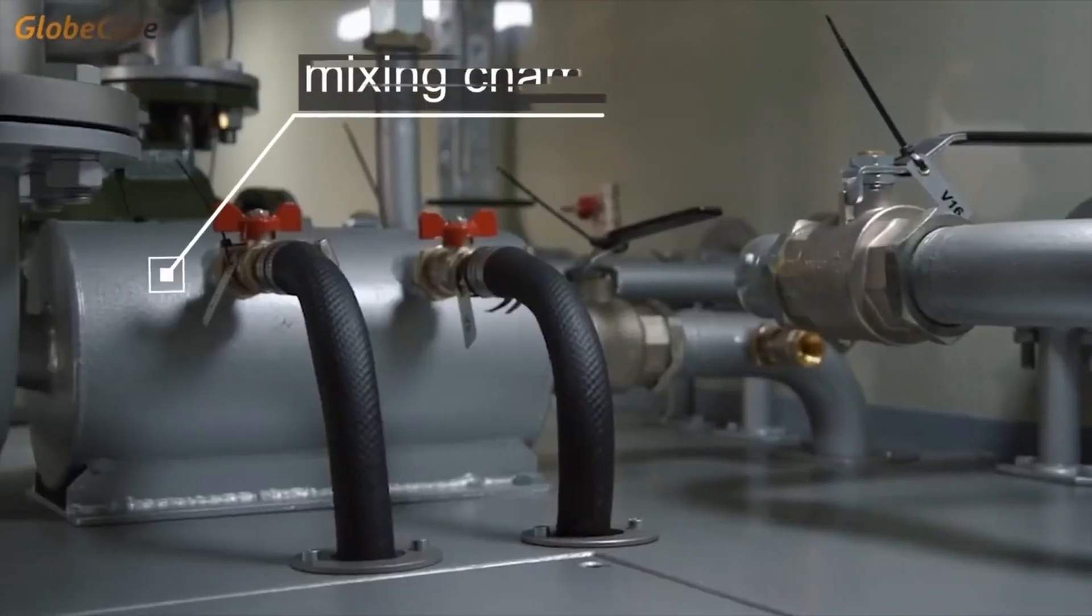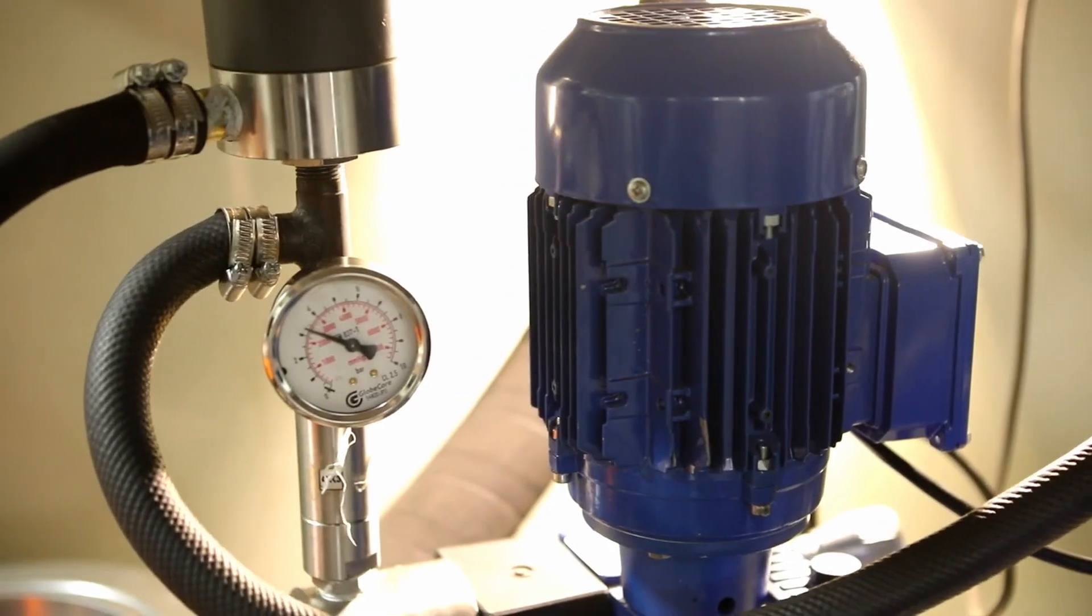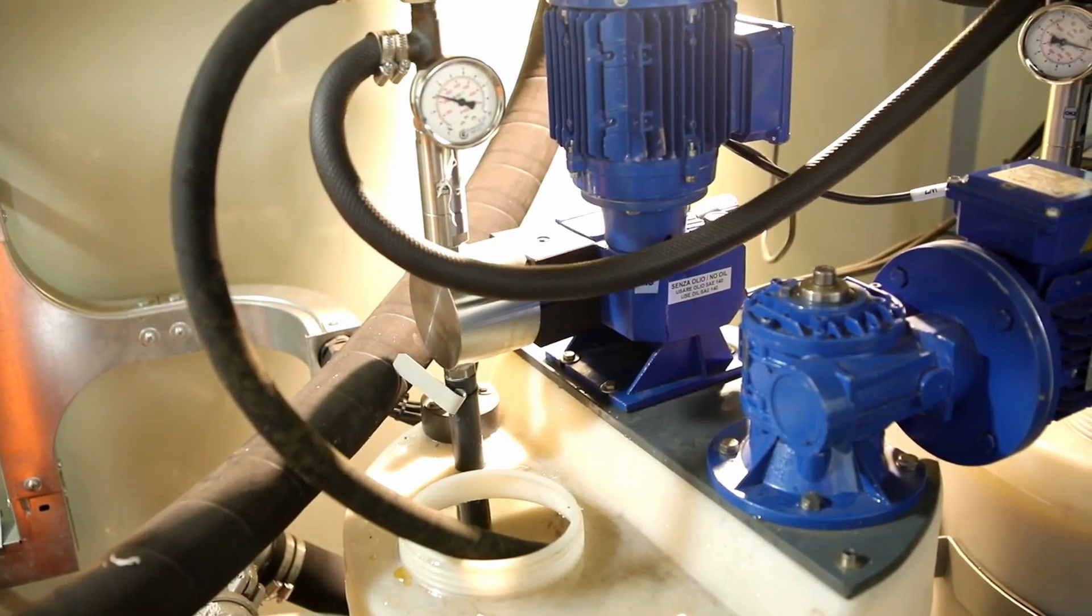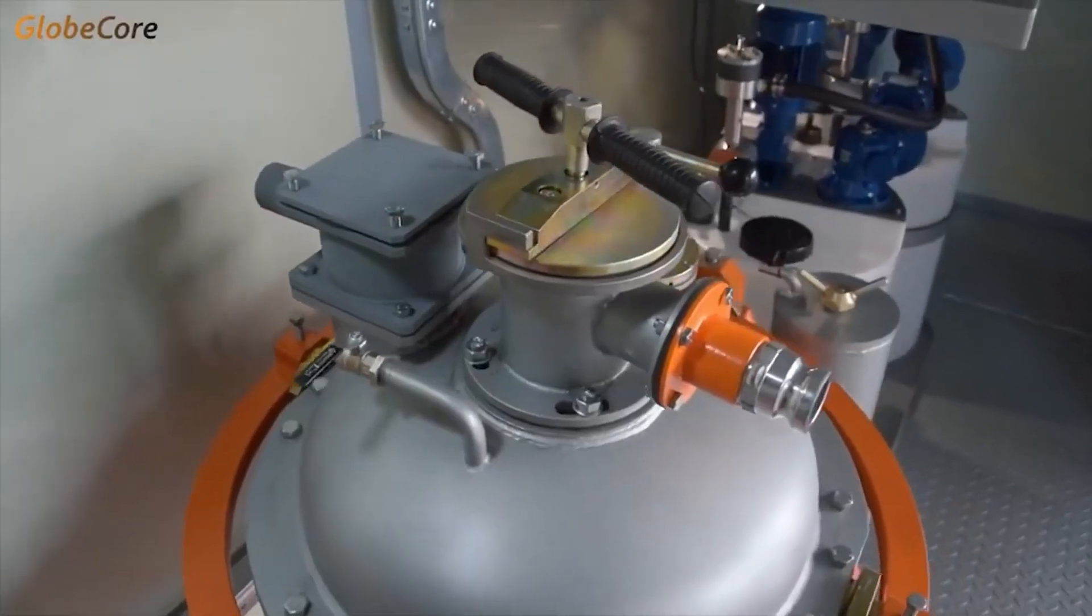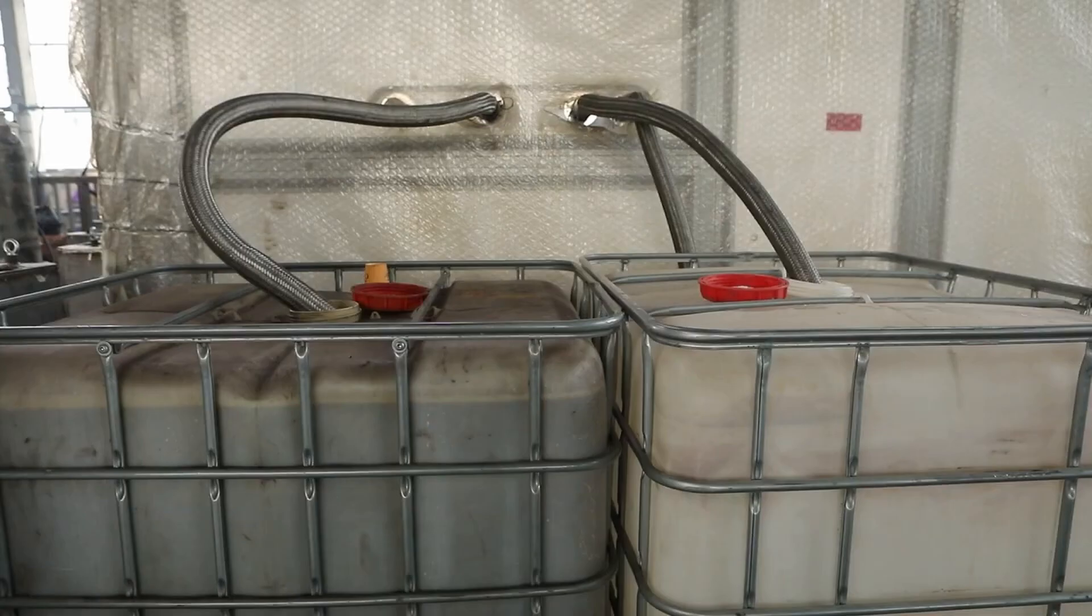The water enters the mixing chamber where a chemical agent solution, that is iron sulfate, is supplied by a dosing pump. After pre-mixing, the water and the chemical agent enter the operating chamber of the vortex layer device where hexavalent chromium is converted to trivalent chromium, after which it enters the storage tank.